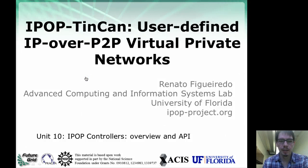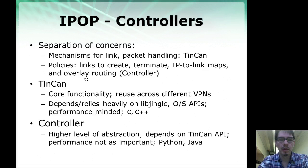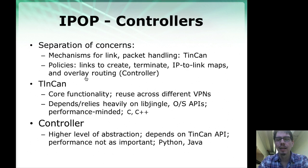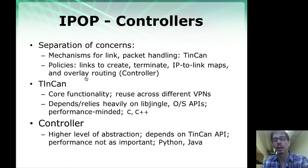Hello and welcome to lecture number 10, where we're going to cover IPOP controllers and the API between controller and Tincan. As mentioned in a previous lecture, the idea behind separating controllers from the Tincan data path is inspired by OpenFlow and software-defined networks — separating concerns between low-level packet handling and creating and managing links, which is the responsibility of Tincan, from the policies: when to create a link, when to terminate a link, how to map IP addresses to links, and how to route throughout the overlay.